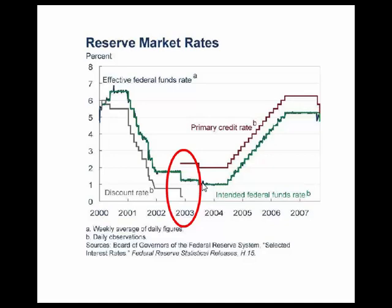That way, if banks needed to borrow money, they would go to other banks and borrow money at the federal funds rate rather than going to the Fed and borrowing at the higher primary credit rate.